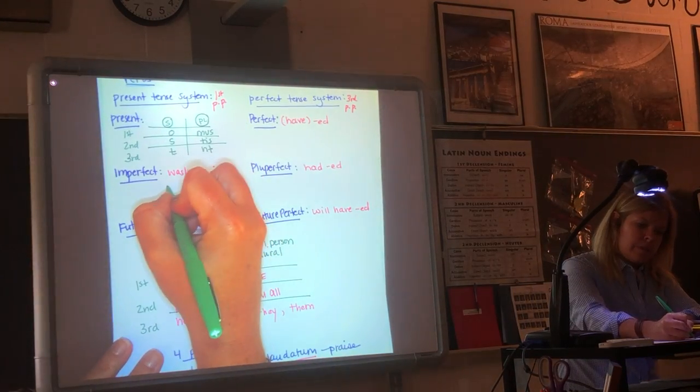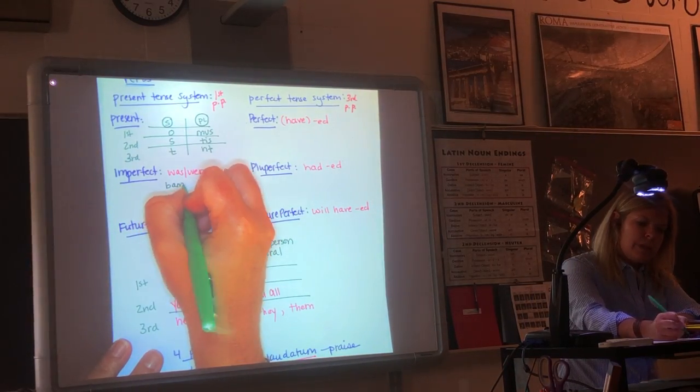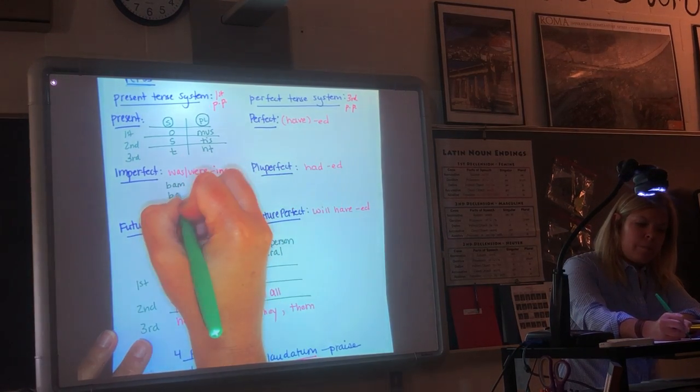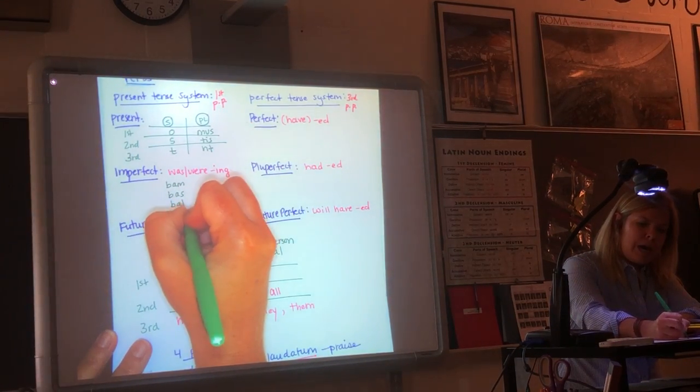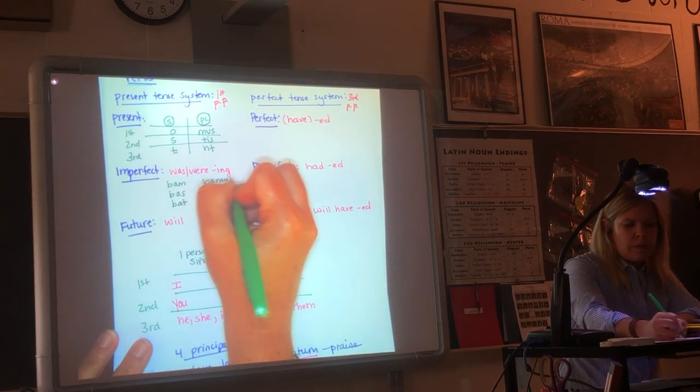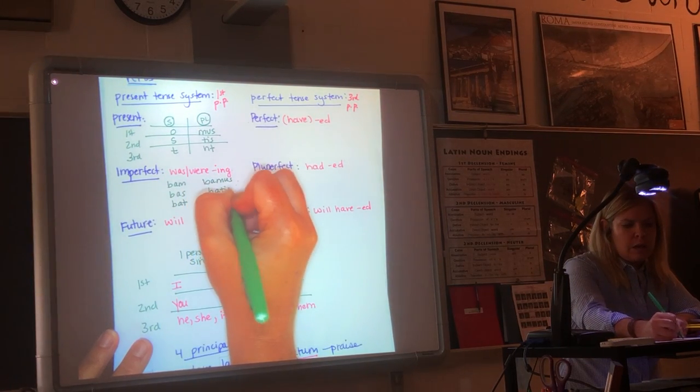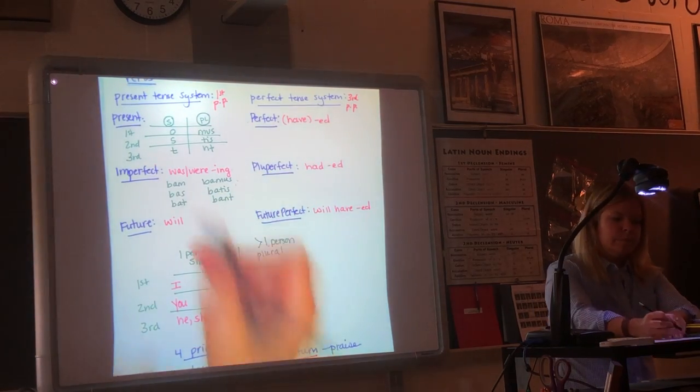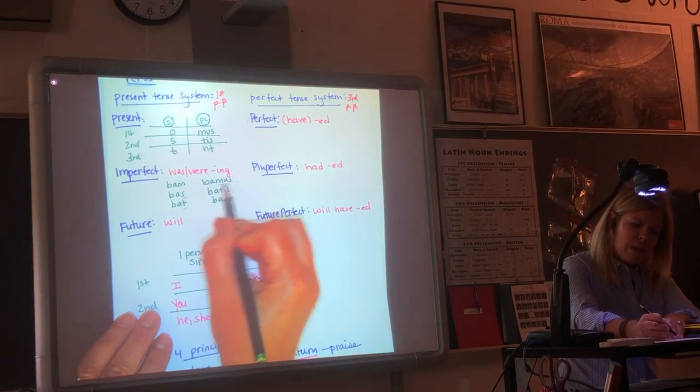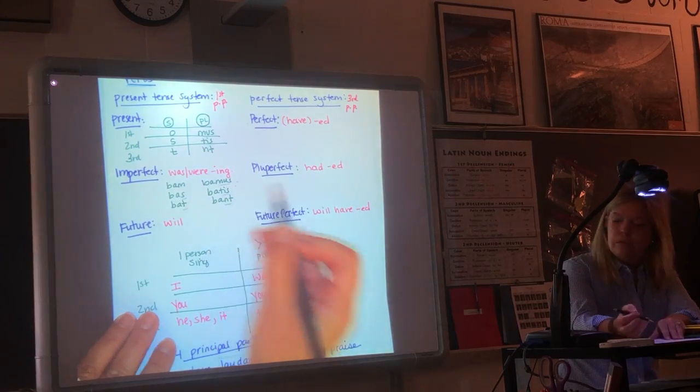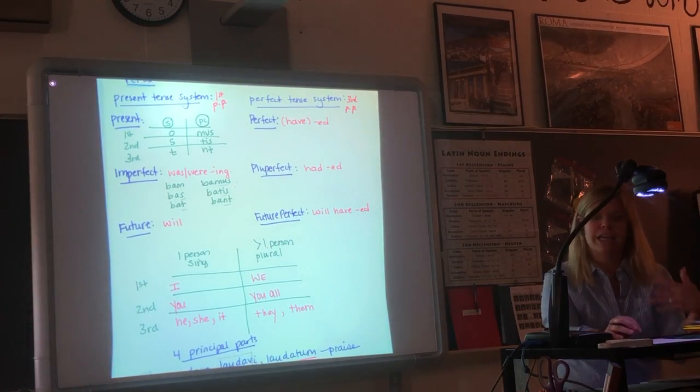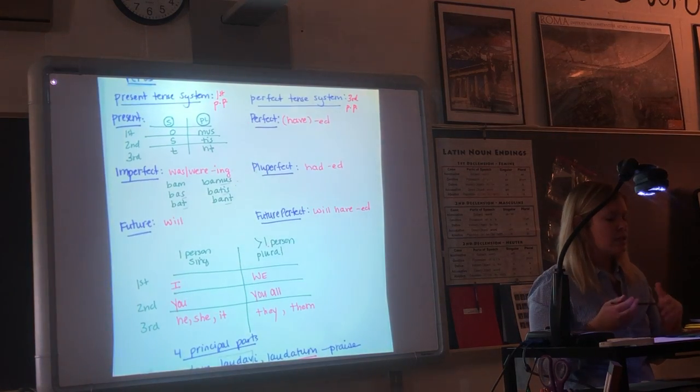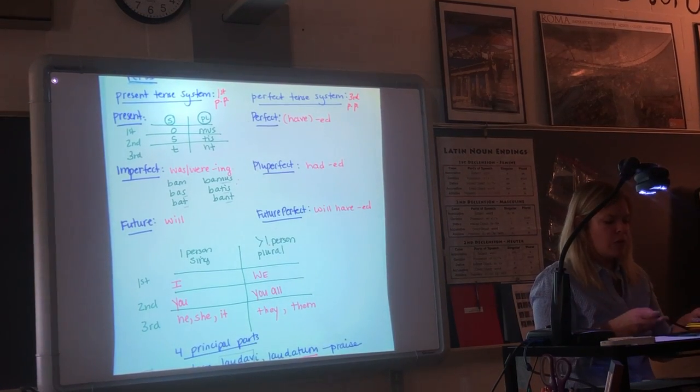Imperfect: -bam. Remember we said Flintstones. Bam. We're in the past. -bam, -bas, -bat, -bamus, -batis, -bant. We pointed out that you still have your -s, -t, -mus, -tis, -nt. So just bam, like squishy. Bam-s-t-m-u-s-t-i-s-n-t. So those familiar patterns remain.